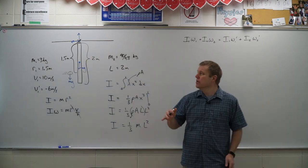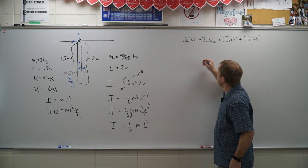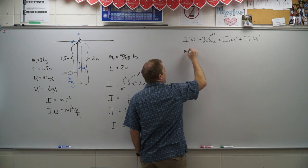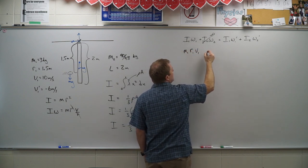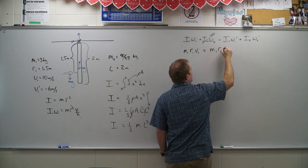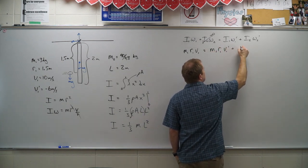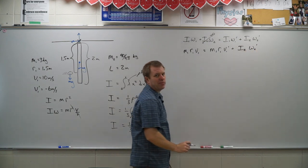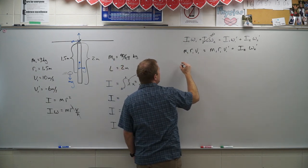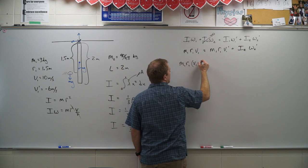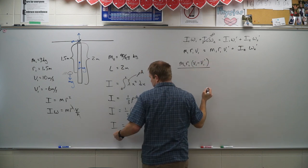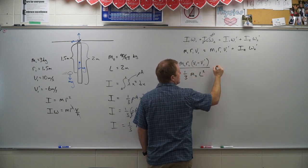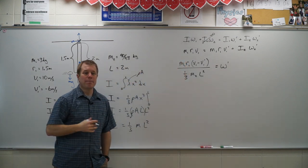Now we can start to actually put this information in here. So originally the bar is not moving, but the ball is. So I have M1 R1 V1 equals M1 R1 V1 prime plus I2, which I just kind of set up here, times omega 2 prime. And we're really trying to solve for that omega 2 prime. So let's move this over. So now I have M1 R1 times V1 minus V1 prime, all divided by my I2, which we can make that substitution. Now it's one third M2 L squared will give me my final omega prime.